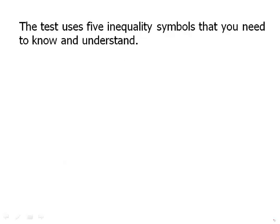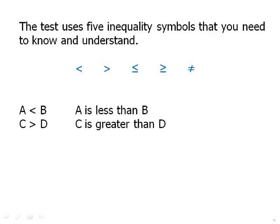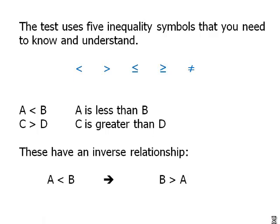The test uses five inequality symbols that you need to know and understand. First, the less than and greater than symbols: A is less than B, C is greater than D. It might be helpful to remember these by thinking of the symbol as the jaws of a crocodile — it's open toward the bigger thing, because the crocodile is hungry and wants to eat the bigger thing. Also notice these two have an inverse relationship: if A is less than B, that necessarily means B is greater than A, so we can swap the order and reverse the direction the inequality points.